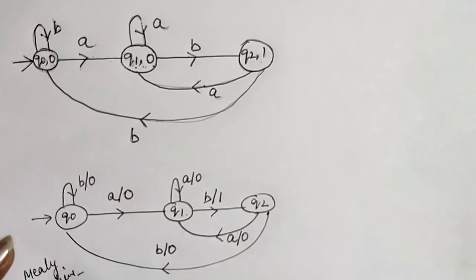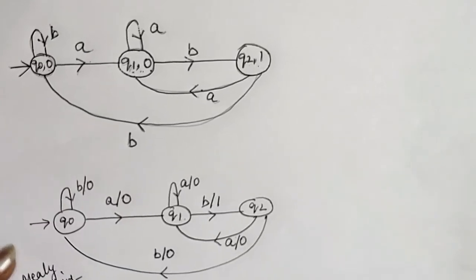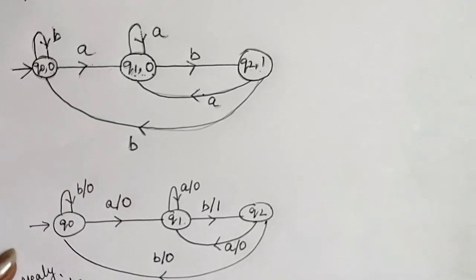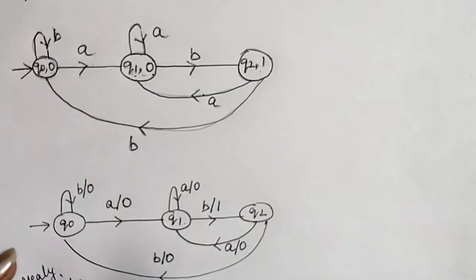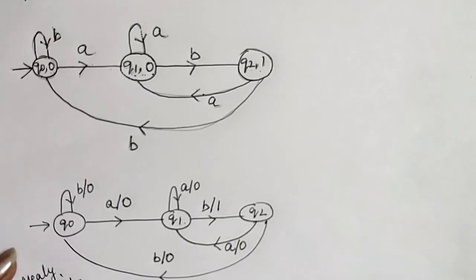So this is how we convert a Moore machine into a Mealy machine. We have to keep in mind that whenever there is a transition going to a next state, whatever output is associated with that destination state, take that output and print it with the transition.